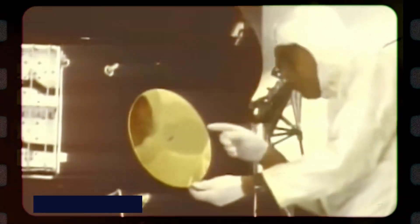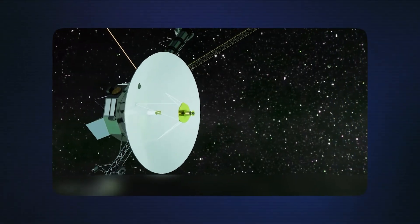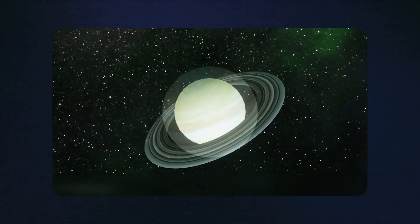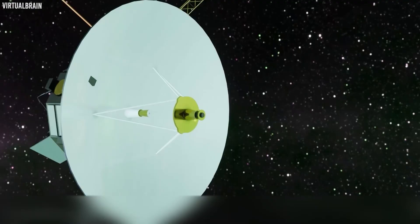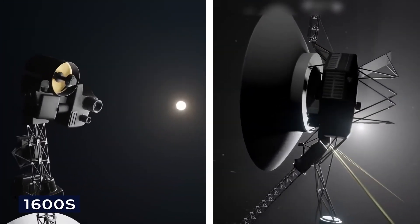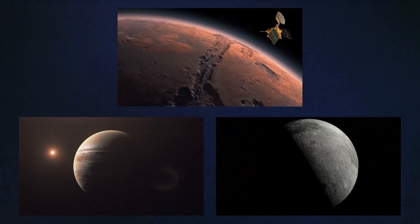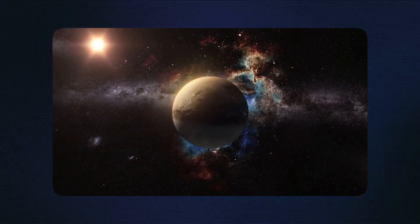Life on board Voyager during these decades was a constant battle against the inevitable. Its power supply, fueled by the heat from decaying plutonium-238, gets about four watts weaker every year. Engineers had to make tough decisions about which instruments to keep running and which to shut down forever. The cameras went dark in 1990, other instruments followed as power dwindled. And all the while, the distance between Voyager and Earth grew, making communication increasingly difficult. The signal from Voyager became so faint that only NASA's largest antennas in the Deep Space Network could detect it.